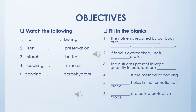After the question answers, you will do objectives. Fill in the blanks: Number one: The nutrients required by our body are — write the name of the nutrients. Number two: If food is overcooked, useful — are lost. Number three: The nutrients present in large quantity in potatoes are —. Number four: — is the method of cooking. Number five: — helps in the formation of blood. Number six: — are called protective food.